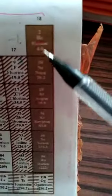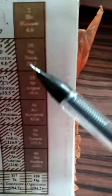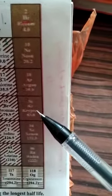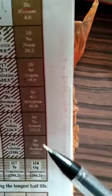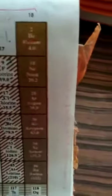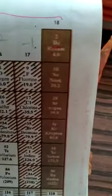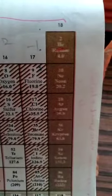And this last group, 18, we call it as inert gases. Okay. Helium, neon, argon, krypton, xenon and radon. Why we call them as inert gases? Because their outermost shells are full.